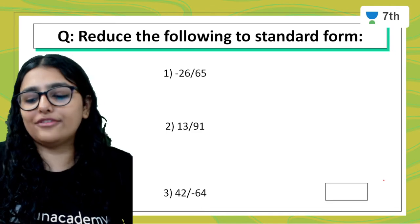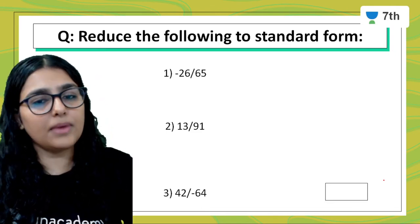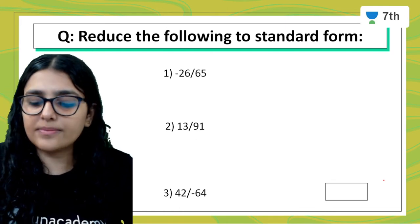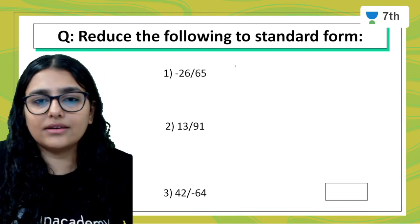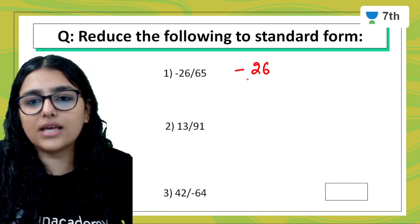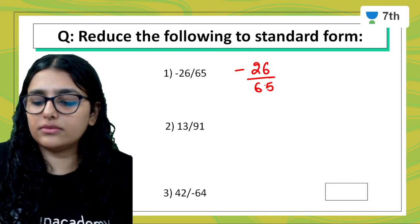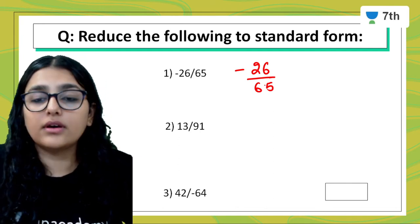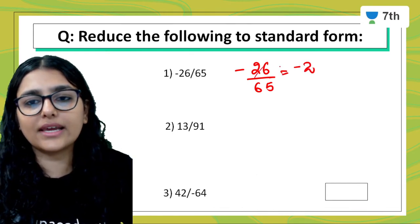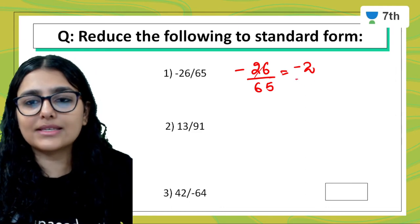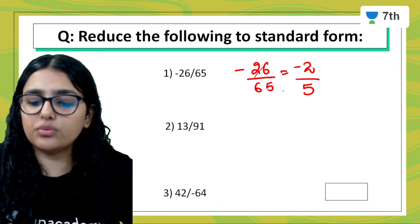Reduce the following to standard form. For the first one, minus 26 upon 65: we can divide both by 13. 13 times 2 is 26, so numerator becomes minus 2. 13 times 5 is 65, so denominator becomes 5. Don't forget to put the minus sign. This becomes minus 2 by 5.